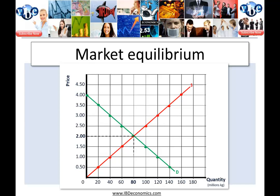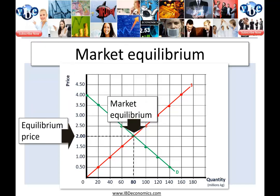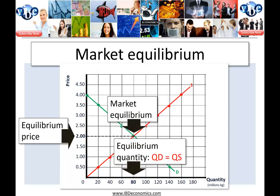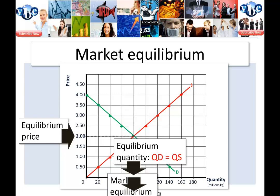Where the two curves meet, we have our equilibrium price and our equilibrium quantity demanded. Market equilibrium: quantity where supply equals demand determines the equilibrium price in the market and the equilibrium quantity. Quantity demanded equals quantity supplied. Equilibrium basically means in balance — quantity demanded equals the quantity supplied. Everything's in balance.